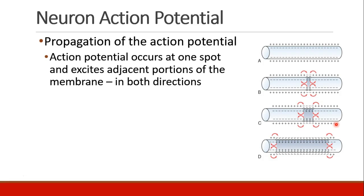The action potential propagates down the length of the nerve. In fact, it occurs at one spot, and then it excites the adjacent portions of the membrane in both directions. So we actually see the action potential moving out in both directions from its initial spot, depolarizing more and more of the nerve, and then repolarization will follow afterwards.